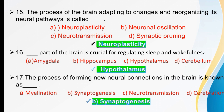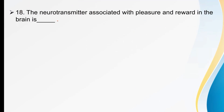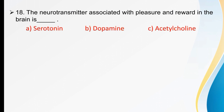The neurotransmitter associated with pleasure and reward in the brain is dash. Options are serotonin, dopamine, or acetylcholine. The neurotransmitter associated with pleasure and reward in the brain is dopamine.